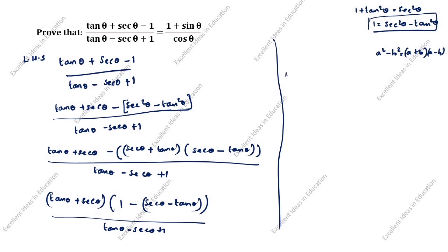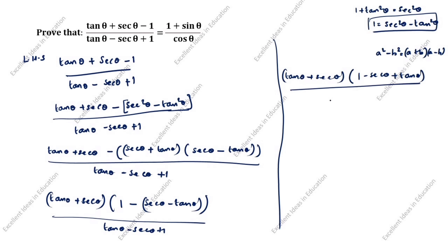Next, expanding the bracket: we get terms including minus secant theta plus 1. You can see that the denominator and numerator are the same, so we will cancel them.